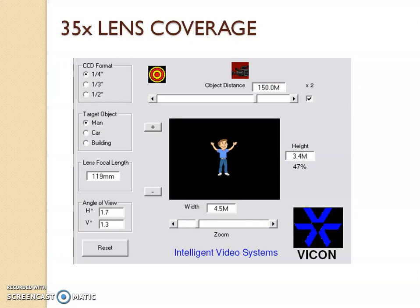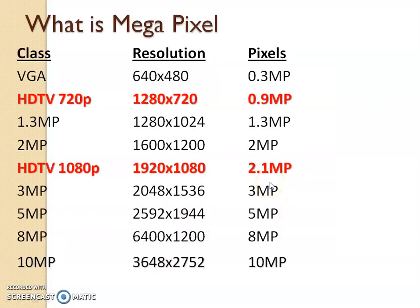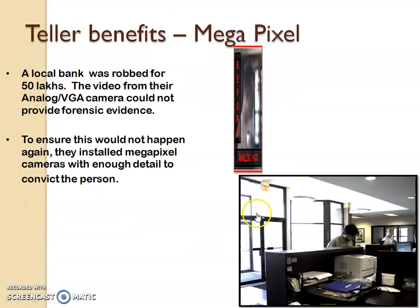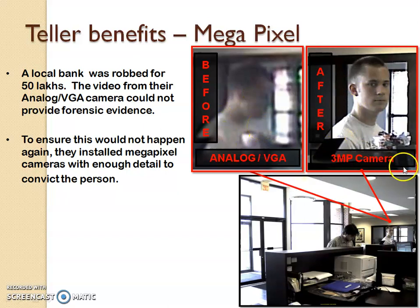Next is lens coverage. We have 35x and 26x lenses, and police have given some recognition criteria for these. The coverage depends on the clarity the user wants from the image. Megapixels define the clarity of the image. We also have tilt and megapixel options. If the resolution is poor, you won't be able to identify the intruder clearly, so a higher resolution camera is needed.